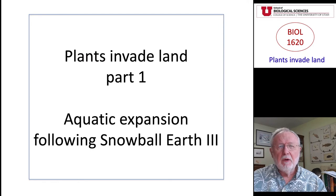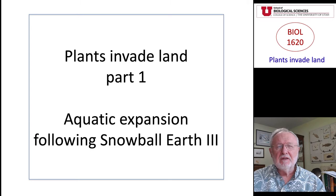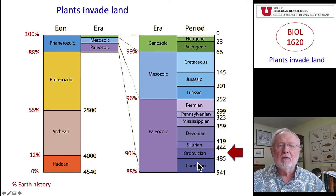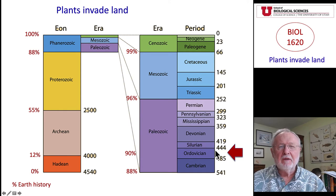In Part 1, we pick up the evolution of plants at the time following the end of Snowball Earth 3, some 650 to 700 million years ago. To put this in perspective with respect to the history of our planet, we're going to talk about the Ordovician — a time period between about 450 and 485 million years ago.